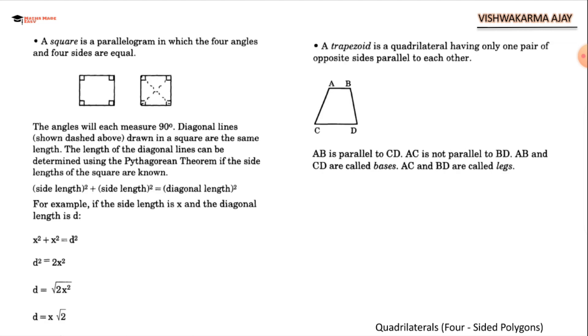A square is a parallelogram in which the four angles and four sides are equal. Square is also a kind of parallelogram because opposite sides are parallel. The angles will each measure 90 degrees. Diagonal lines drawn in a square are the same length. The length of the diagonal line can be determined by using Pythagorean theorem like the last one.